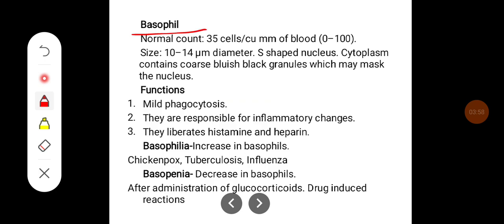Basophil normal count is around 35 cells per cubic millimeter of blood, can range from 0 to 100. Size is 10 to 14 microns, slightly smaller than the neutrophil. There is an S-shaped nucleus. Cytoplasm contains coarse bluish black granules which may mask the nucleus sometime.